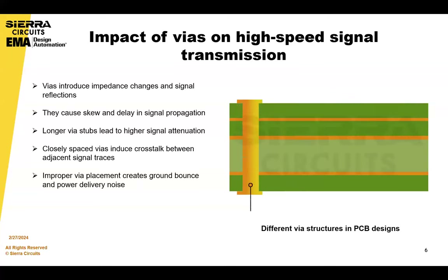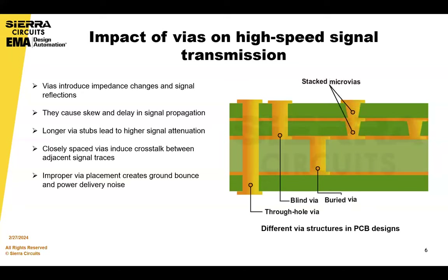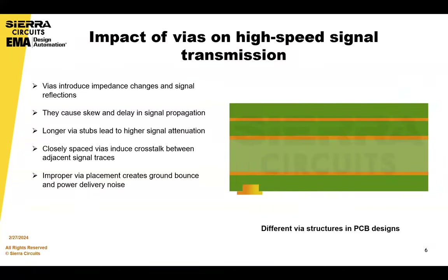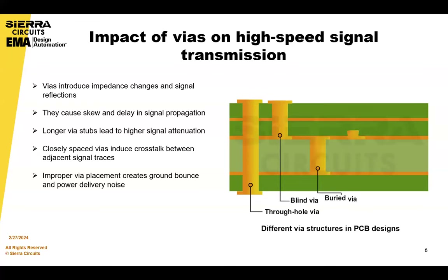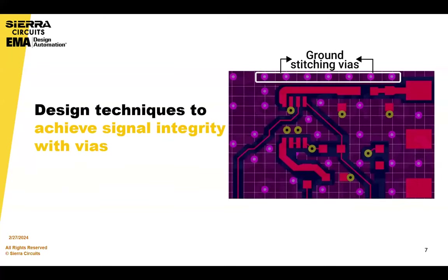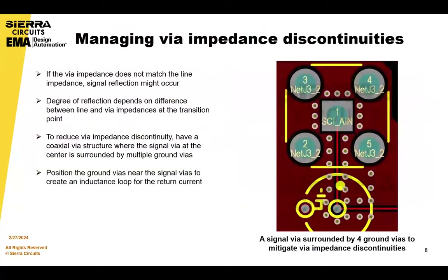Lastly, improper VIA placement can disrupt the return path for signals, causing ground bounce and power delivery noise. These are really important to keep track of in terms of your VIA placements. We're going to go over design techniques to achieve better signal integrity.